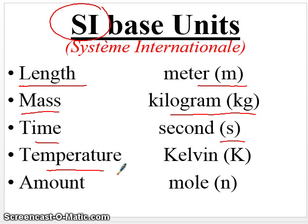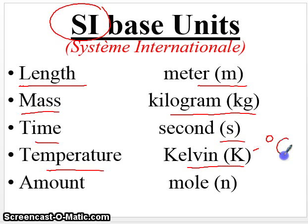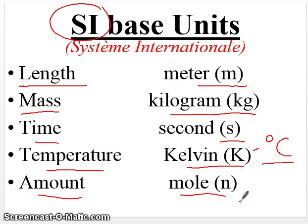For temperature, we're actually going to use Kelvin. We'll get into Kelvin more later — essentially it's related to degrees Celsius. For amount, or anytime we want to know how many of a chemical we have, we'll use something called the mole. A few of these we'll discover later as we go along. Note that for example with the kilogram, we don't use it for mass here in America, but the rest of the world including the scientific world will use it.